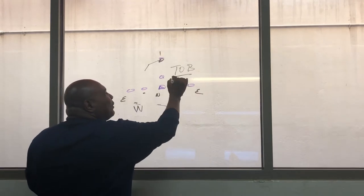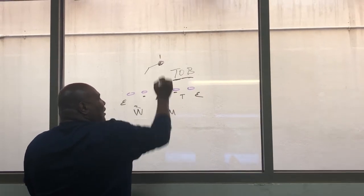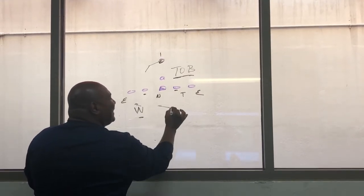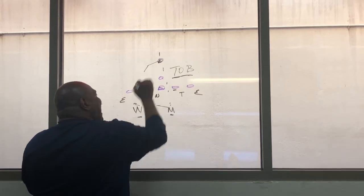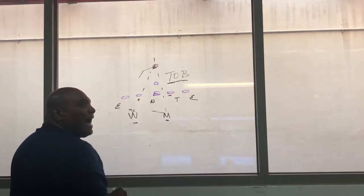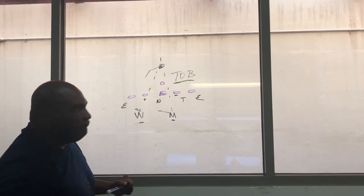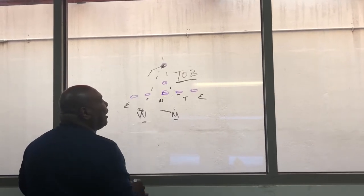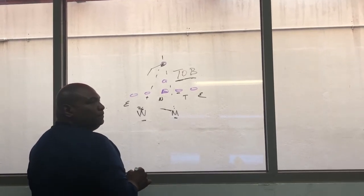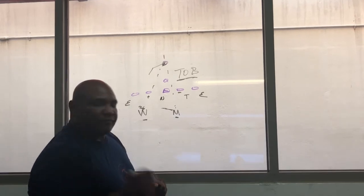So to recap, one back set, we're going to read track of back. These two linebackers, that Mike and that Will, they're going to go ahead and go eye that guy. They're going to eye that one back back there. Any flow, they're going to work inside out on the ball to flow.